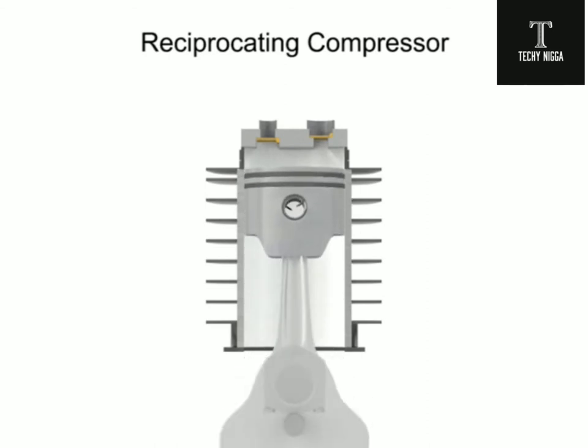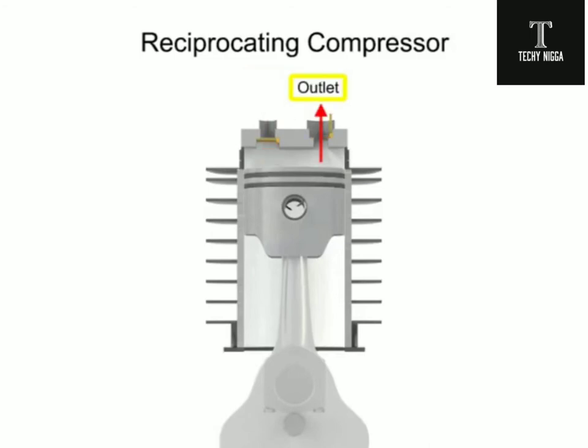There are two valves at the head of the cylinder: an inlet and an outlet. The inlet, sometimes called the suction valve, allows atmospheric air to enter the cylinder. The outlet, sometimes called the discharge valve, ejects the newly compressed air from the cylinder.